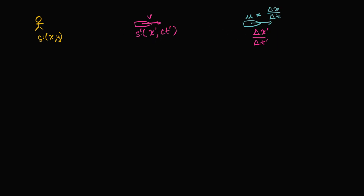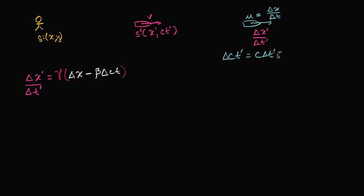Let's go back to the Lorentz transformations. First, let's think about what change in x prime is going to be. Change in x prime is going to be the Lorentz factor times the quantity: change in x minus beta times change in ct. And then we want to divide that by our change in t prime. Let me write the Lorentz transformation for ct prime: change in ct prime, which is the same thing as c times the change in t prime, is equal to the Lorentz factor times...